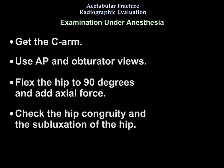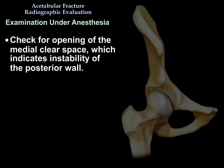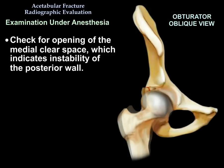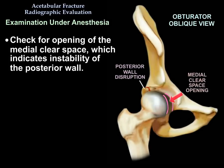The technique involves using a C-arm with AP and obturator views, flexing the hip to 90 degrees, applying axial force, and then checking hip congruity and any subluxation. You should also check for opening of the medial clear space, which indicates instability of the posterior wall.